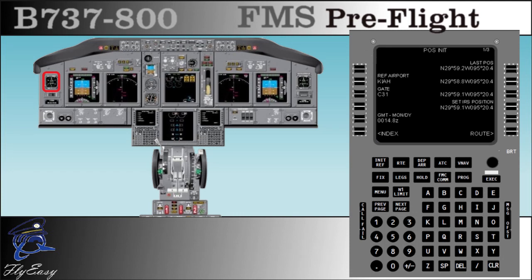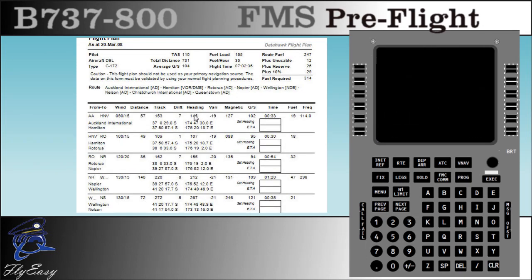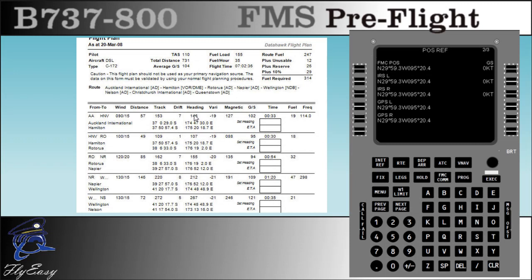The correct time in the captain's clock should agree with the time set on the CDU screen. Press the next page to go to the POS-REF page. The positions computed by the FMC and each IRS and GPS as installed are displayed. Check these positions against the aircraft coordinates shown on the previous page. If a more accurate position is displayed on the POS-REF page, it can be line selected to the scratchpad, then use the previous page key to move back to the POS-INIT page and line select from the scratchpad to update the set IRS position.